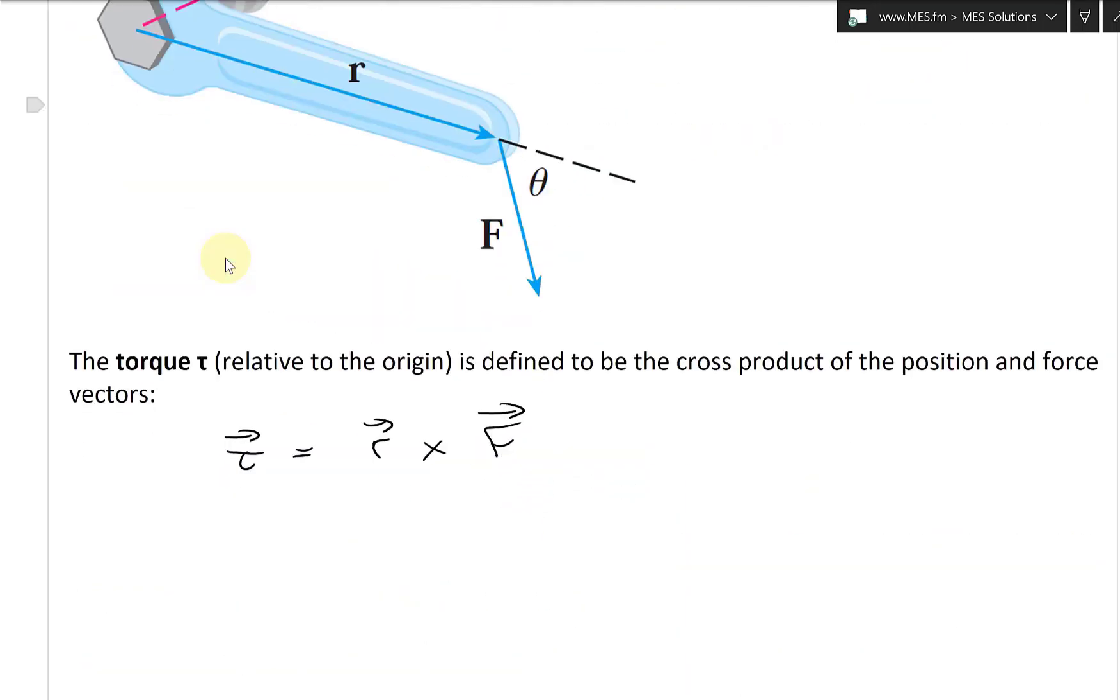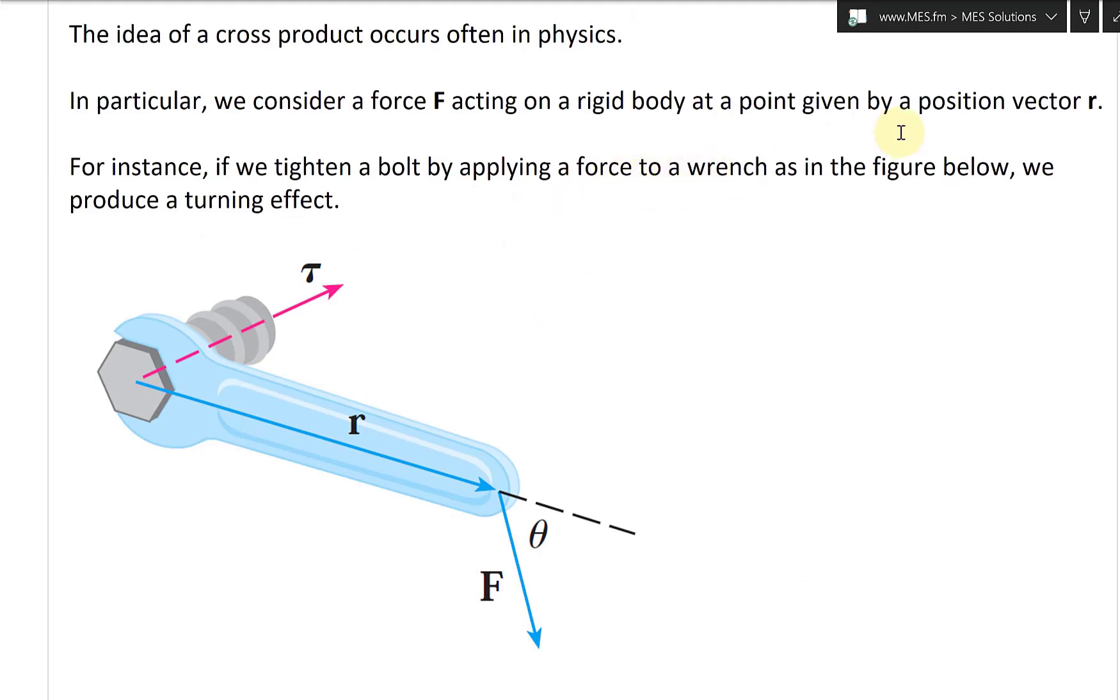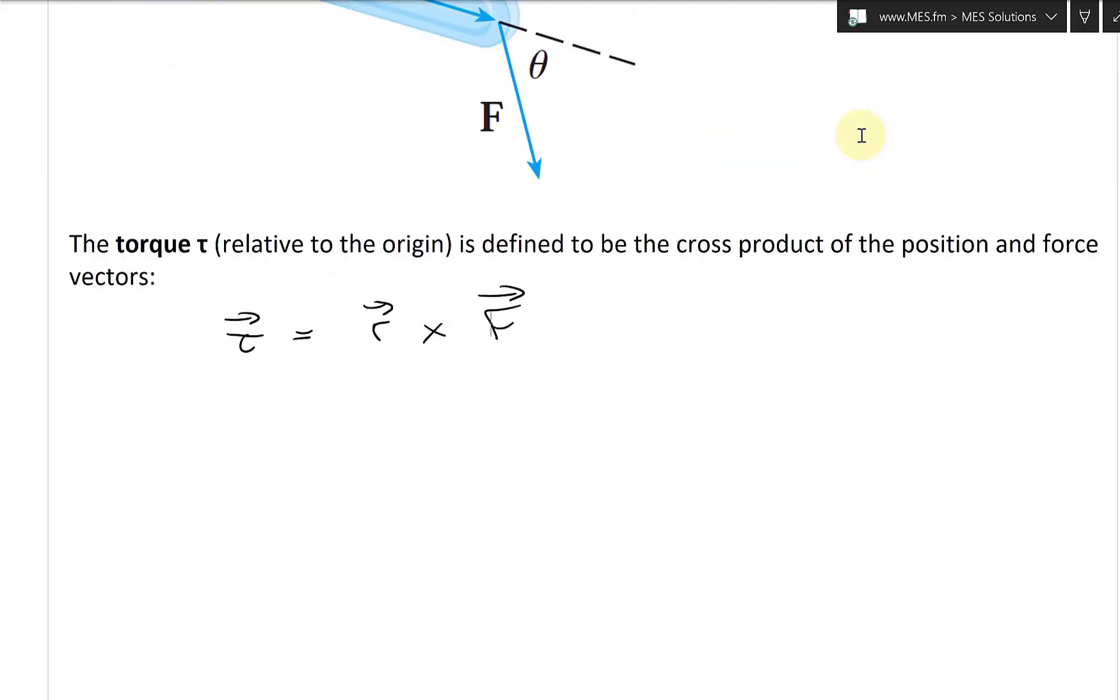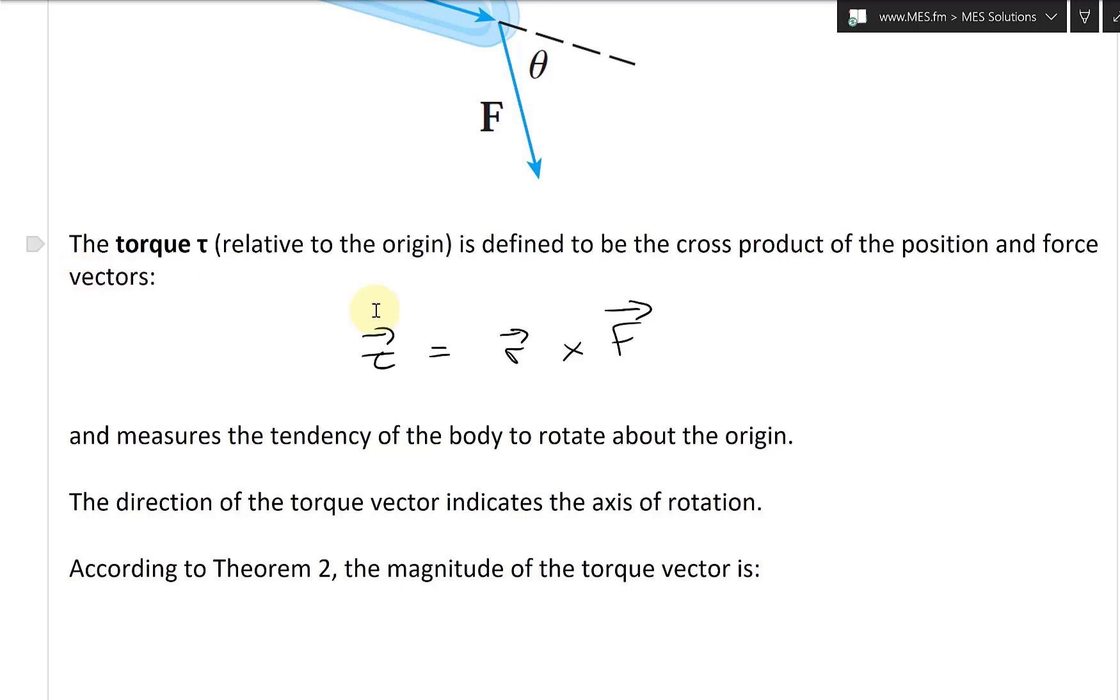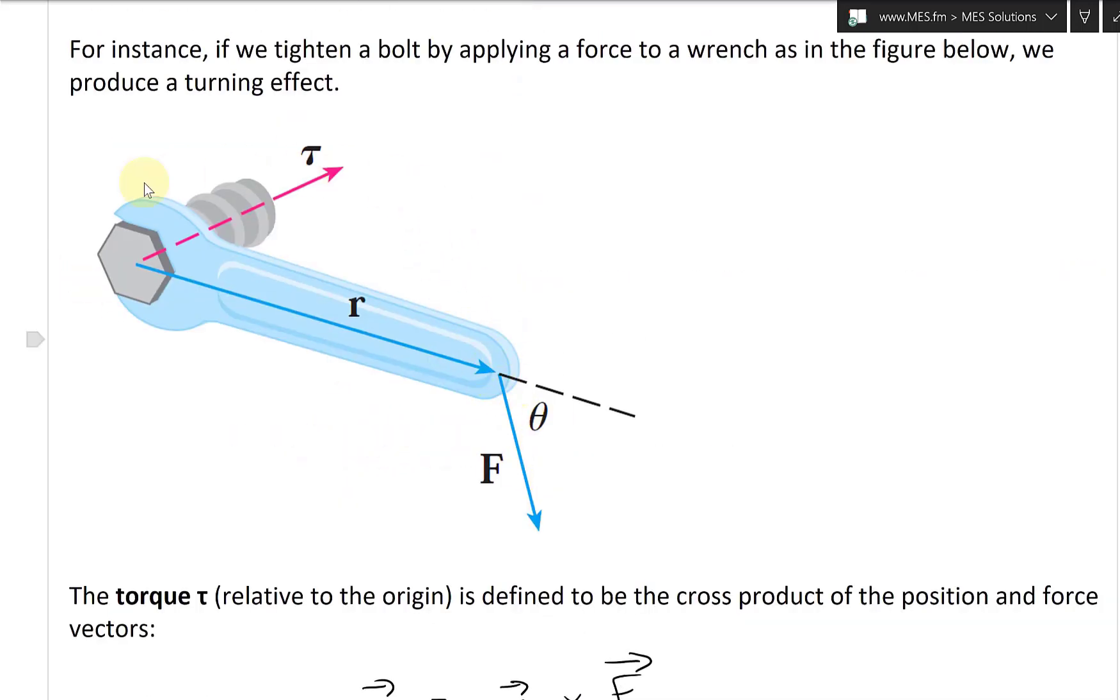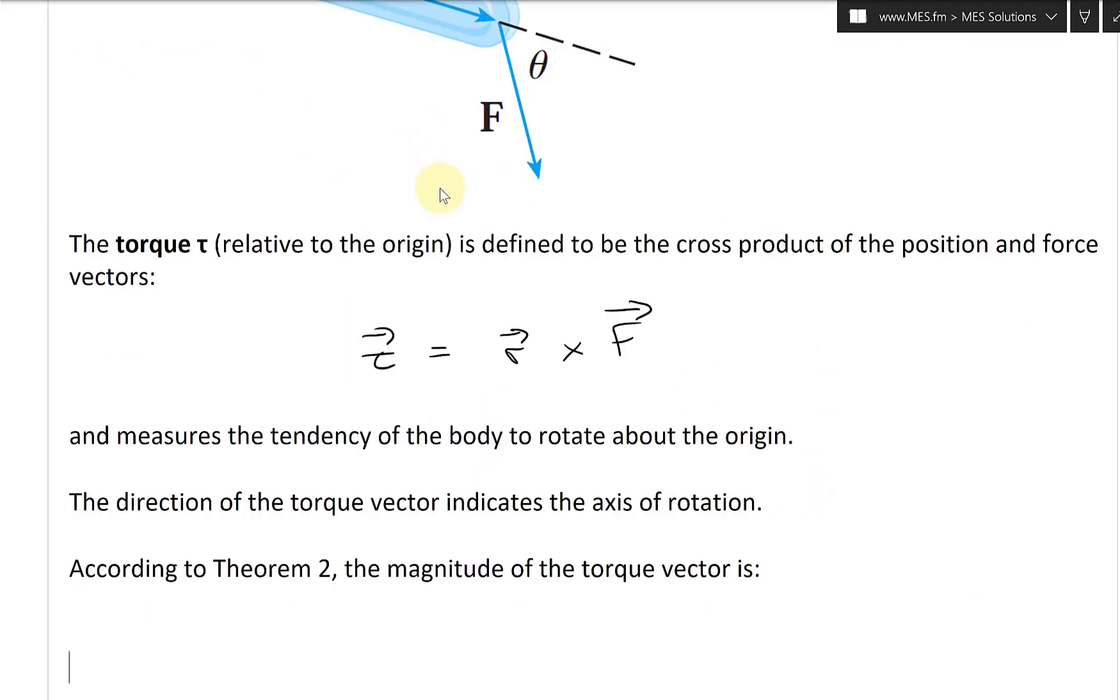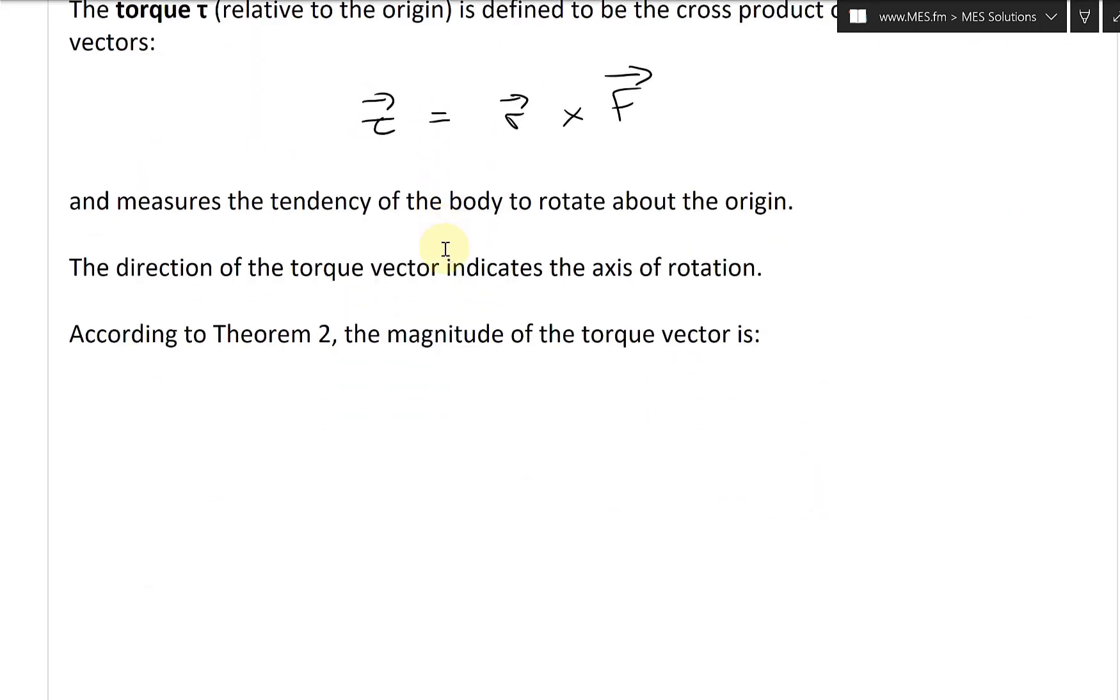So that is the turning effect there, and there's a position vector r. This torque right here measures the tendency of the body to rotate about the origin. The longer, the larger the value, the more tendency it's rotating.